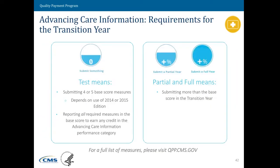On slide 42, what does this mean under the Pick Your Pace? The test would mean that you would do the base measures — either four or five measures, depending upon your edition of certified EHR technology. Partial or full would mean doing more than the base, so doing some of the elements that are part of the performance side of Advancing Care Information.